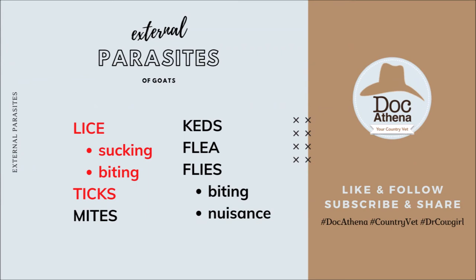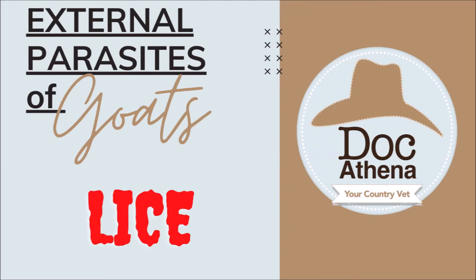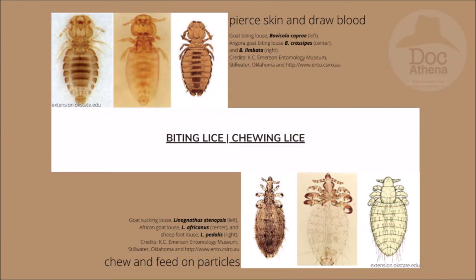For lice, there are two different types: the sucking and the biting types. The biting lice — as you can see in the photo, these pictures of the parasites are the microscopic view. You cannot see them with the naked eye like this; you could see them crawling on the animal's body. However, if you are going to study their anatomy, we have to use a microscope in order to study them.